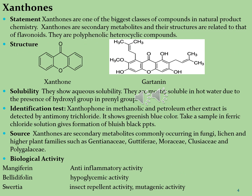Xanthones are one of the biggest classes of compounds in natural product chemistry. Xanthones are secondary metabolites and their structures are related to that of flavonoids. They are polyphenolic heterocyclic compounds. You can see the structures of xanthones which consist of two phenyl groups. The second molecule, gratinine, consists of a large number of polyhydroxyl and polyphenolic groups.